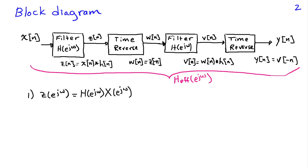First of all, we know that when we filter x, we're just multiplying by the frequency response of the filter. Then when we do the time reversal to obtain w, that corresponds to taking the complex conjugate of Z(e^jω), which is just the conjugate of H(e^jω) times X*(e^jω).